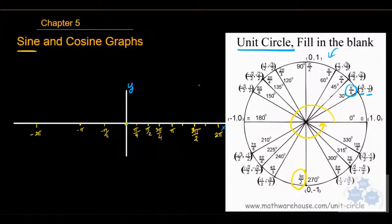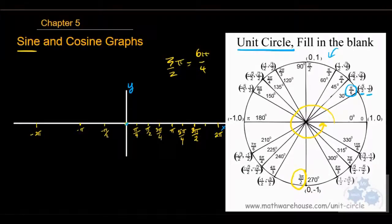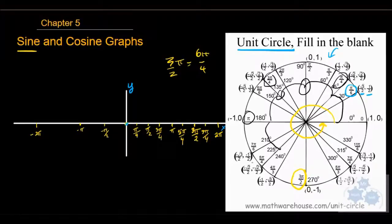Between pi and 3 pi over 2 is 5 pi over 4. That means 3 pi over 2 is also 6 pi over 4. So the next one is 7 pi over 4. Looking back at the unit circle: 1 pi over 4, 2 pi over 4, 3 pi over 4, 4 pi over 4, 5 pi over 4, 6 pi over 4, 7 pi over 4, and 8 pi over 4. Hopefully you can see how we put that scale in there.